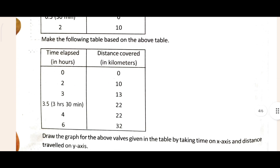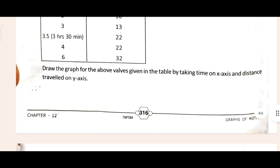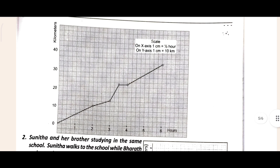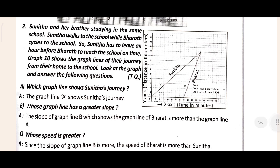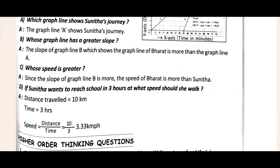Make the following table — this is your answer sheet. See that graph also. Here the answer A is given: which graph lies in Sunita's journey. And answer B is also given below — the graph lies in Sunita's journey. I hope this is clear for you.